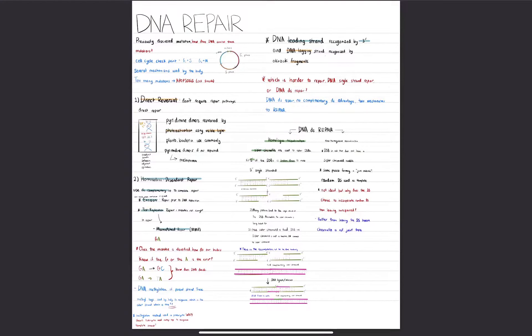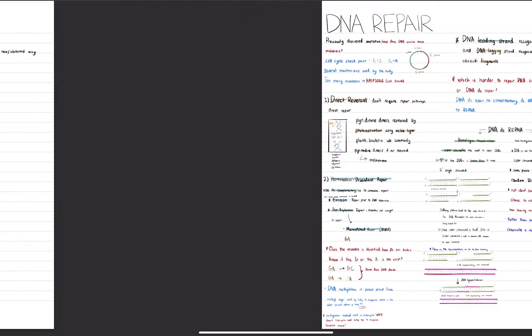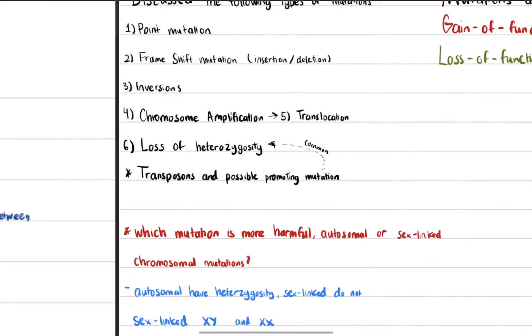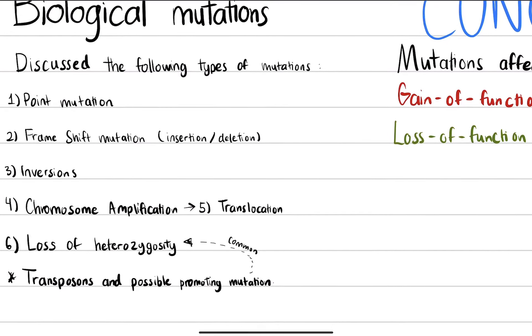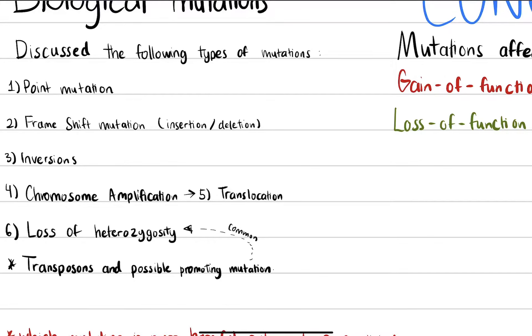Our bodies are prone to mutations. We have a point mutation, which is when a single nucleotide is replaced accidentally. We have a frameshift mutation, which is an insertion of a nucleotide or a series of nucleotides that causes the entire codons to be changed.